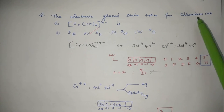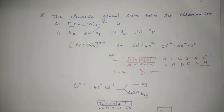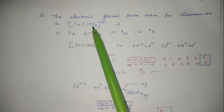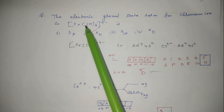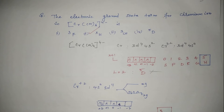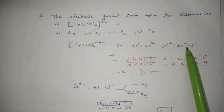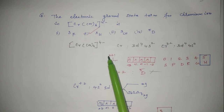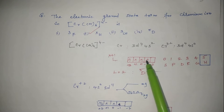The first question: find the electronic ground state term for chromium ion in [Cr(CN)₆]⁴⁻. One thing to note is that CN⁻ is a strong ligand and this is an octahedral complex. CN⁻ ligand gives inner sphere d²sp³ hybridization. Four options are given and we have to calculate for [Cr(CN)₆]⁴⁻. Chromium is 3d⁵4s¹, and Cr²⁺ is 3d⁴4s⁰.